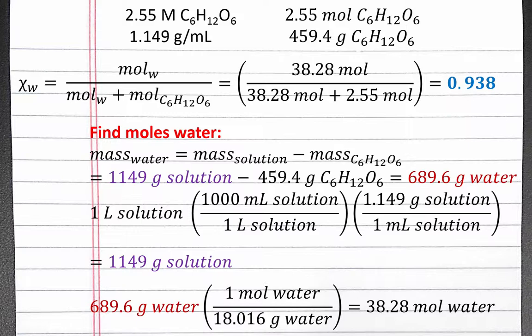However, since glucose is a non-electrolyte, if we had solved for the mole fraction of glucose, the solute, instead of the mole fraction of water, the solvent, we should have gotten 1 minus 0.938, or 0.062 for the mole fraction of glucose.